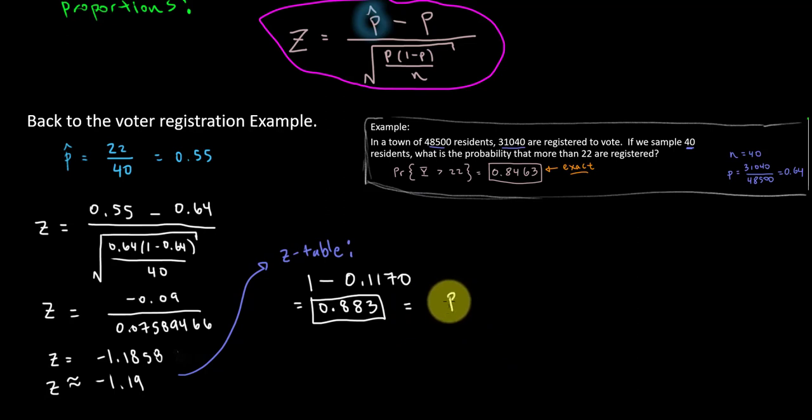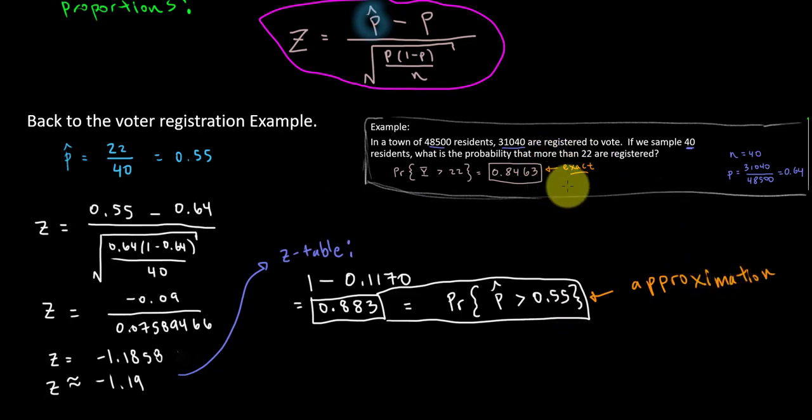So this is actually an approximation to our original question. This is the probability that p-hat is more than 0.55. In our solution, about 0.88, this is an approximation. Contrast with the exact method, because this was exact, because the variable inherently was a binomial variable, and we used the binomial formula to compute this. But here, this is an approximation, this solution here, because we used a normal curve distribution to approximate a binary binomial distribution.